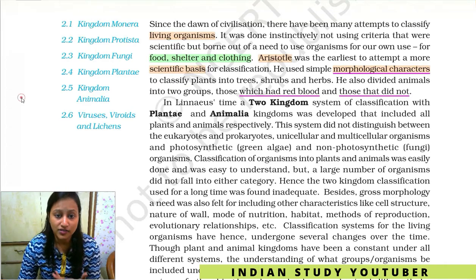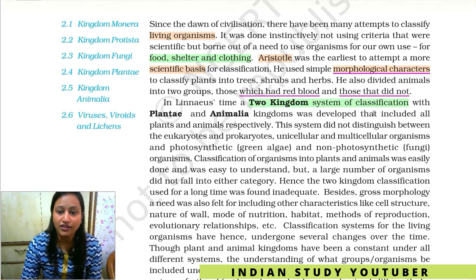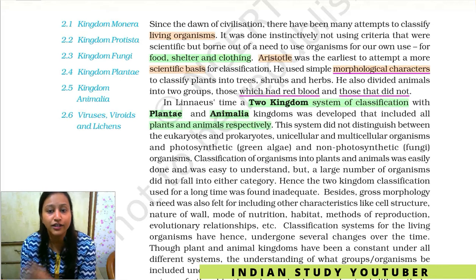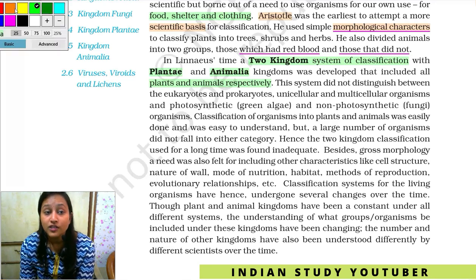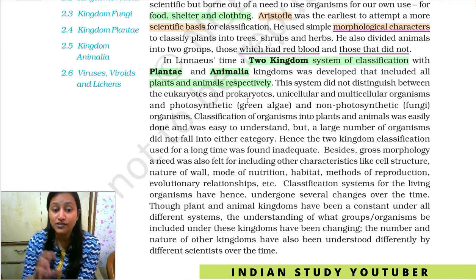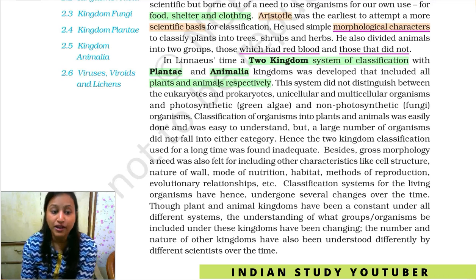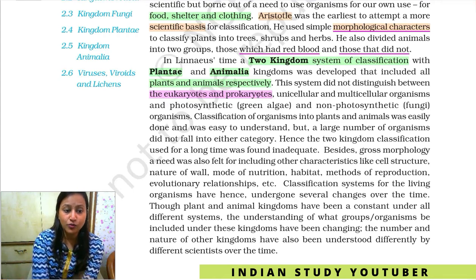After Aristotle, there were many more attempts made to classify organisms. Now let's talk about the two kingdom classification. There are two kingdoms: Plantae and Animalia — one is the plant kingdom and one is the animal kingdom — in which we included all plants and animals. However, this system did not distinguish between eukaryotes and prokaryotes. Everything was simply divided into plant or animal, with no special distinction made between the two types of cells.